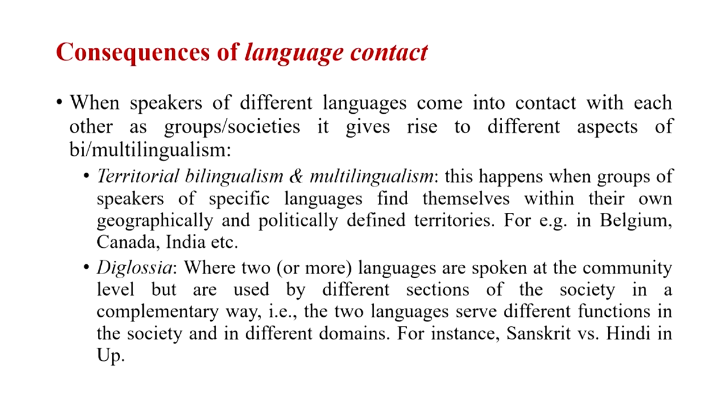One of these is called territorial bilingualism or multilingualism, which typically happens when groups of speakers of specific languages find themselves within their own geographically and politically defined territories. It is almost like saying this area is inhabited by speakers of language A, whereas the adjoining area is inhabited by speakers of language B. This is very common in a few countries — for example, in Belgium the south speaks mainly French whereas the northern cities such as Ghent, Antwerp, and Bruges speak mainly Flemish. Similarly, parts of Canada speak French whereas others speak English, and in India certain states have their own specific languages.